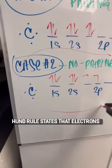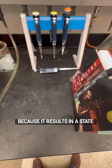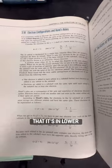Hund's rule states that electrons will fill into subshells with parallel spins before pairing because it results in a state that is lower energy.